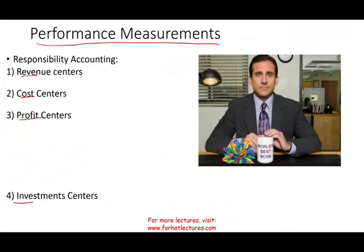Let's talk about the four different responsibility centers. The first is a revenue center — a division that only generates sales and is not responsible for any costs or expenses. The classic example is a sales division, evaluated purely based on sales. Another type is cost centers, where they only generate costs and are not responsible for generating any revenue. These two responsibility centers are measured by variance against a budget goal.